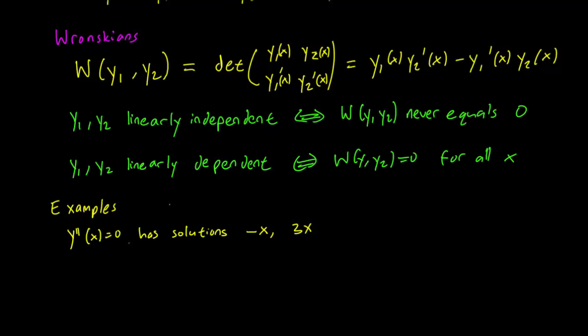The differential equation y'' equals 0 has solutions minus x and 3x. That's pretty easy to check. So let's calculate the Wronskian.